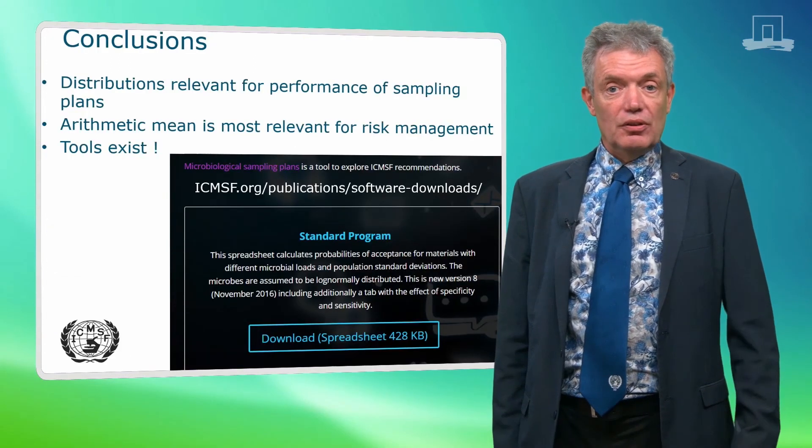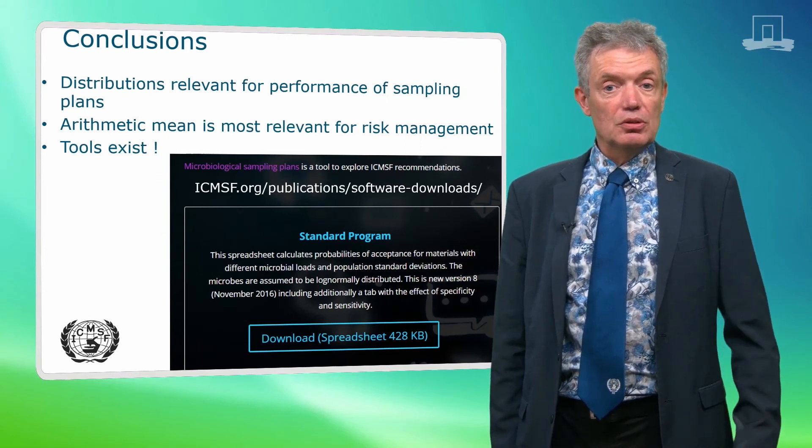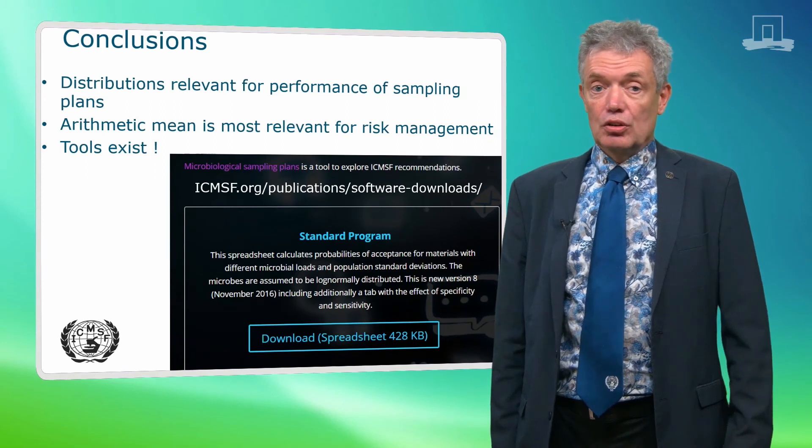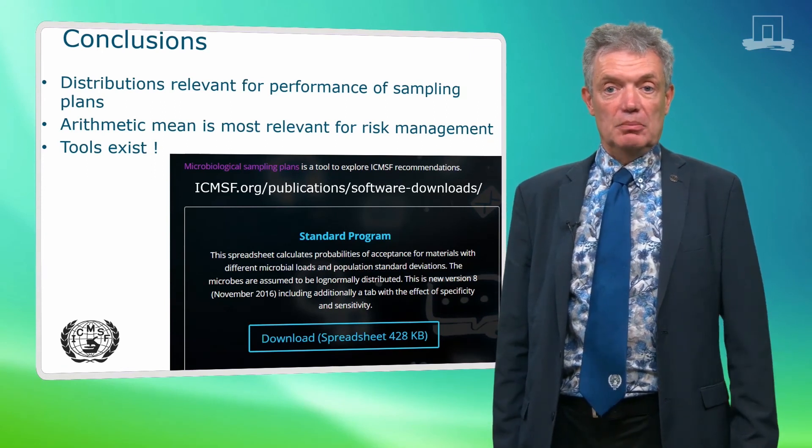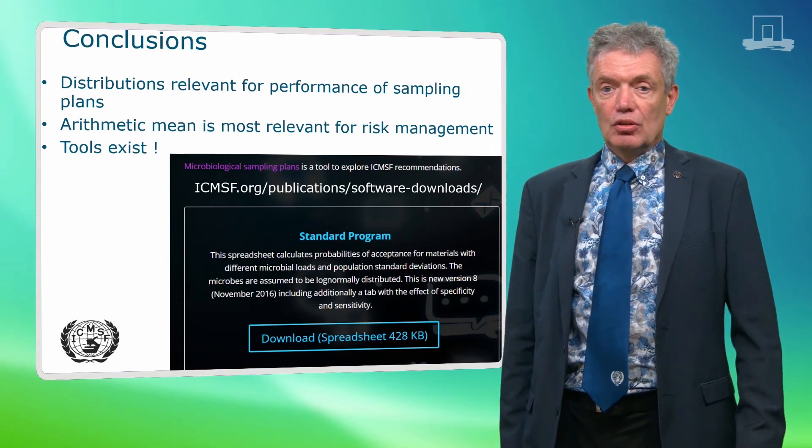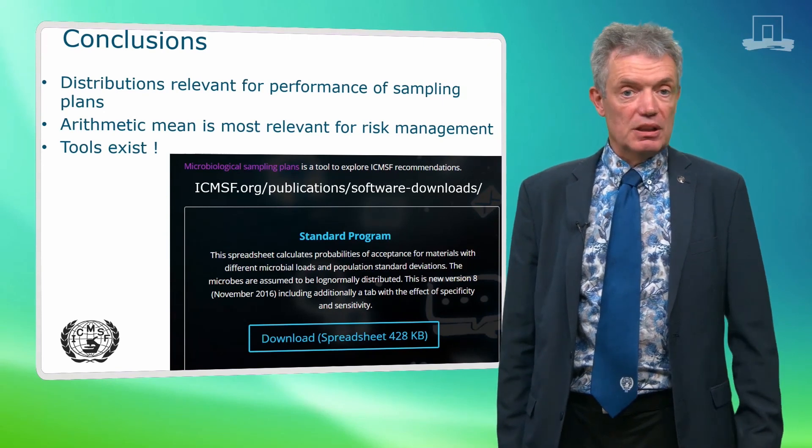Distributions are relevant for the performance of sampling plans. To describe these distributions, the log normal distribution is often preferred. To describe the performance for public health impact and risk management, the arithmetic mean is more relevant than the geometric mean. Tools to support these calculations do exist, like for example the ICMSF spreadsheet.